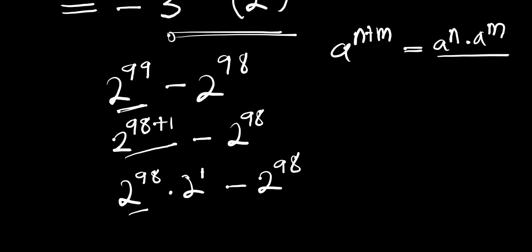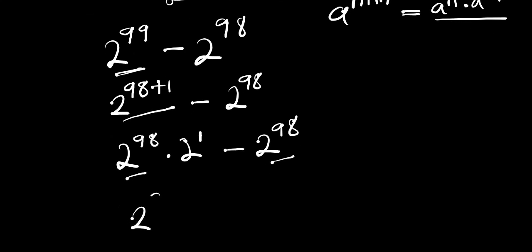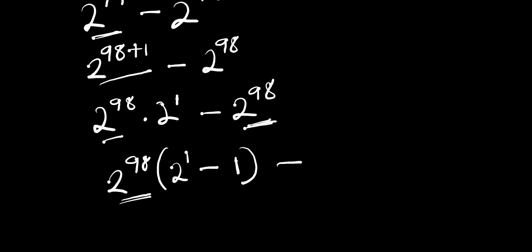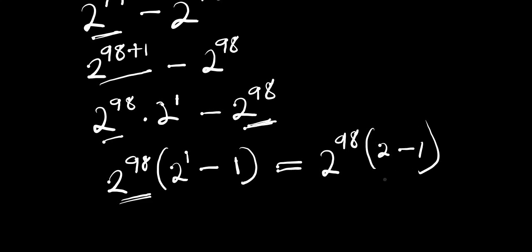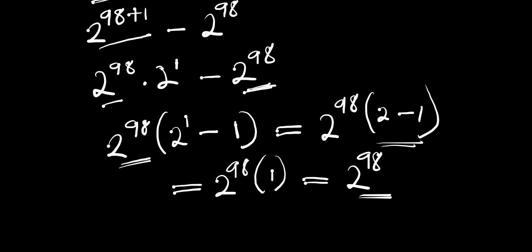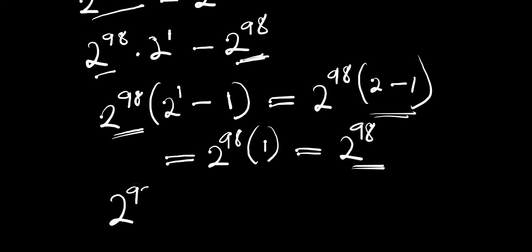Since 2 to the power of 98 appears in both terms, we factor it out, giving us 2 to the power of 98 times (2 to the power of 1 minus 1). Dividing 2^98 by 2^98 gives 1, so inside the bracket we have 2 minus 1, which equals 1. Therefore, 2 to the power of 99 minus 2 to the power of 98 equals 2 to the power of 98.